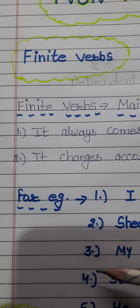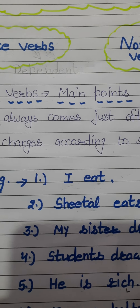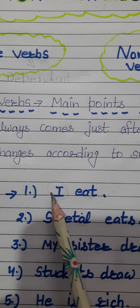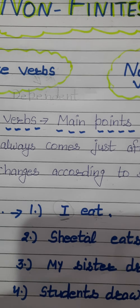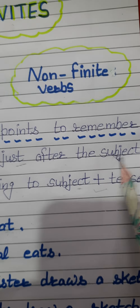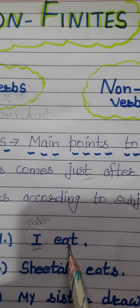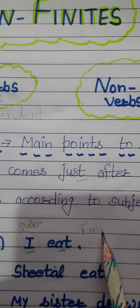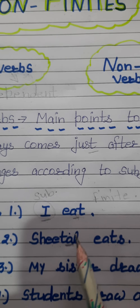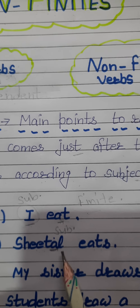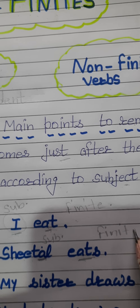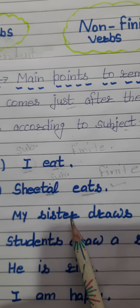Now we have various examples to understand the concept clearly. First: 'I eat' — here 'I' is the subject, and 'eat' comes just after the subject, so 'eat' is our finite verb. Next: 'Shital eats' — here 'Shital' is the subject and 'eats' is the finite verb coming just after the subject. Next: 'My sister draws a sketch' — 'my sister' is the subject here.